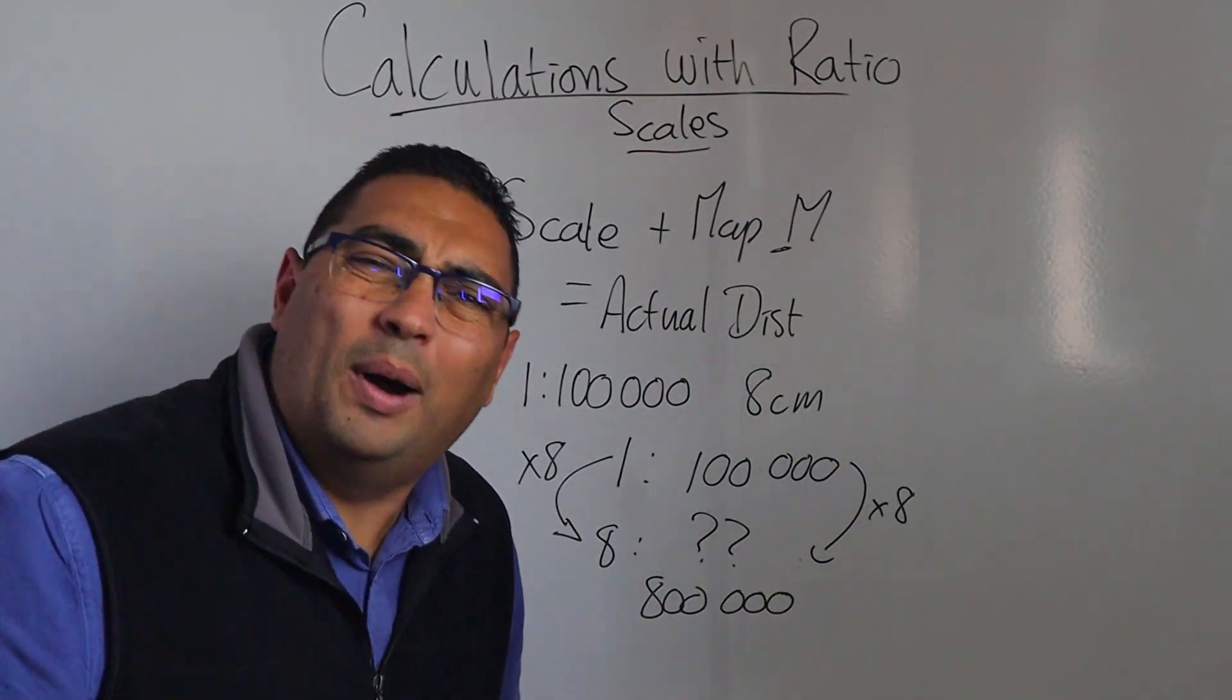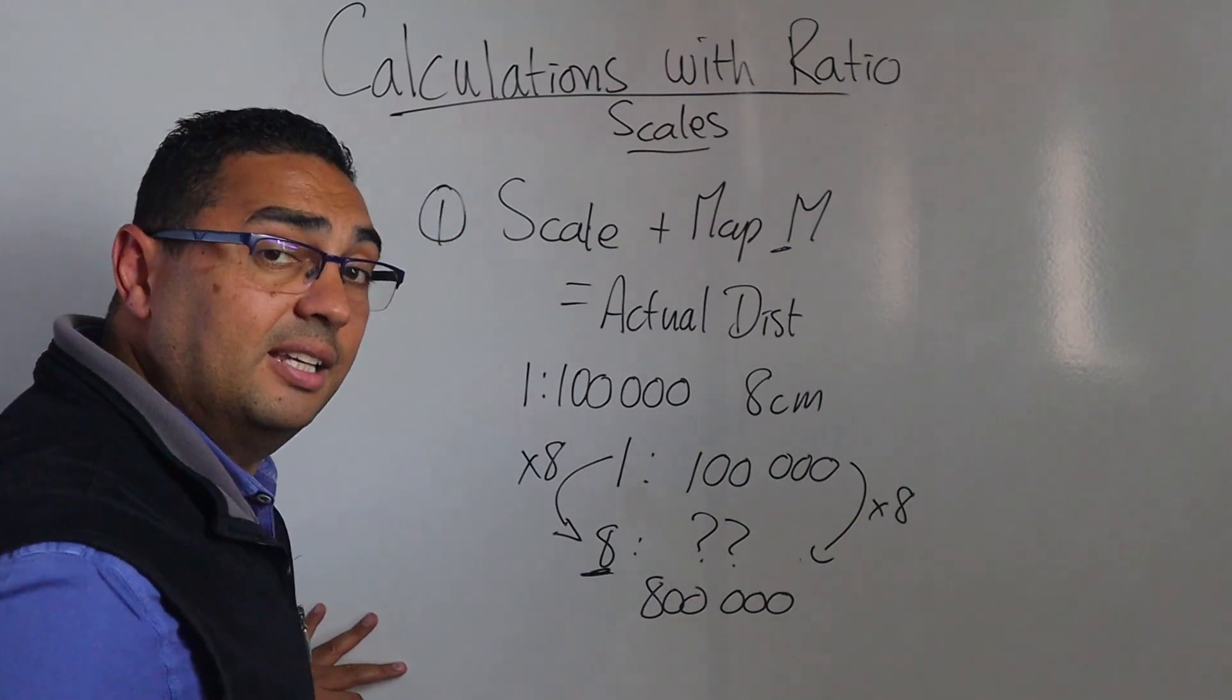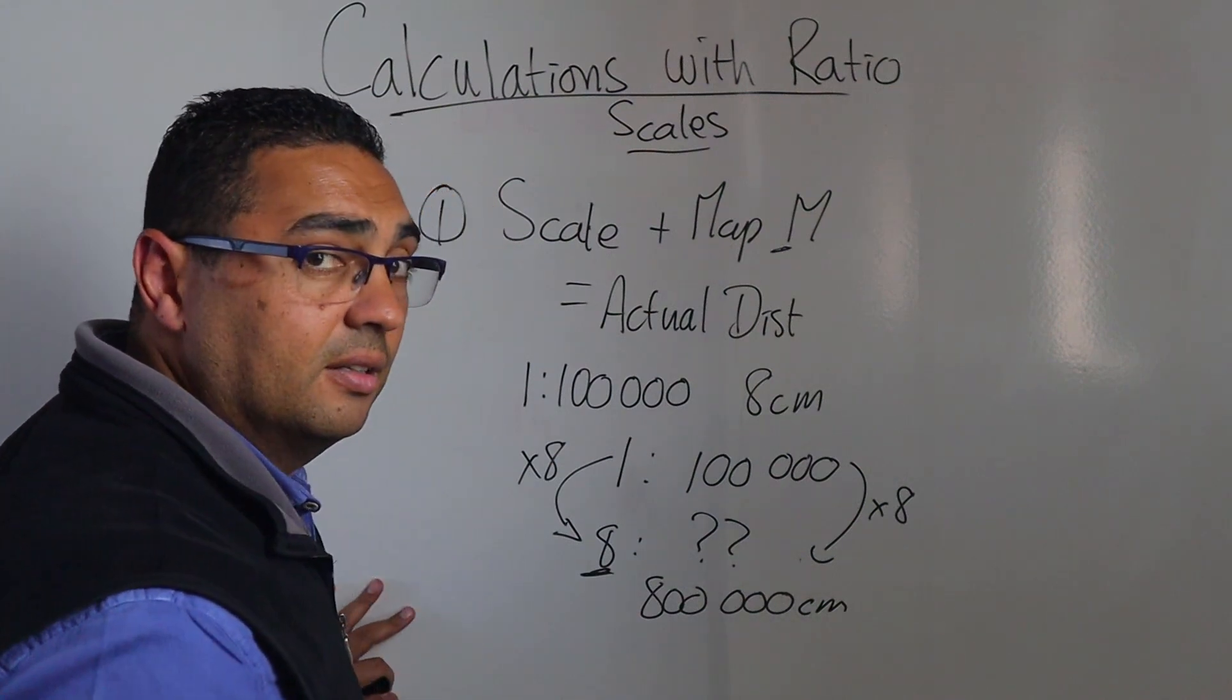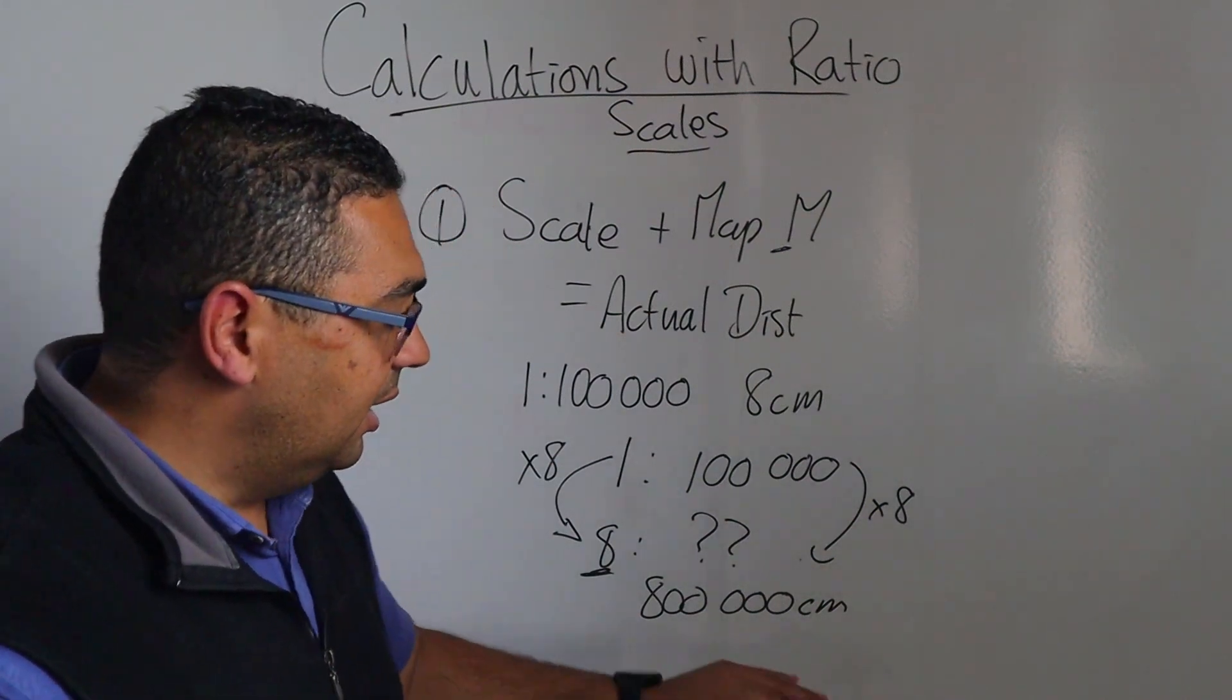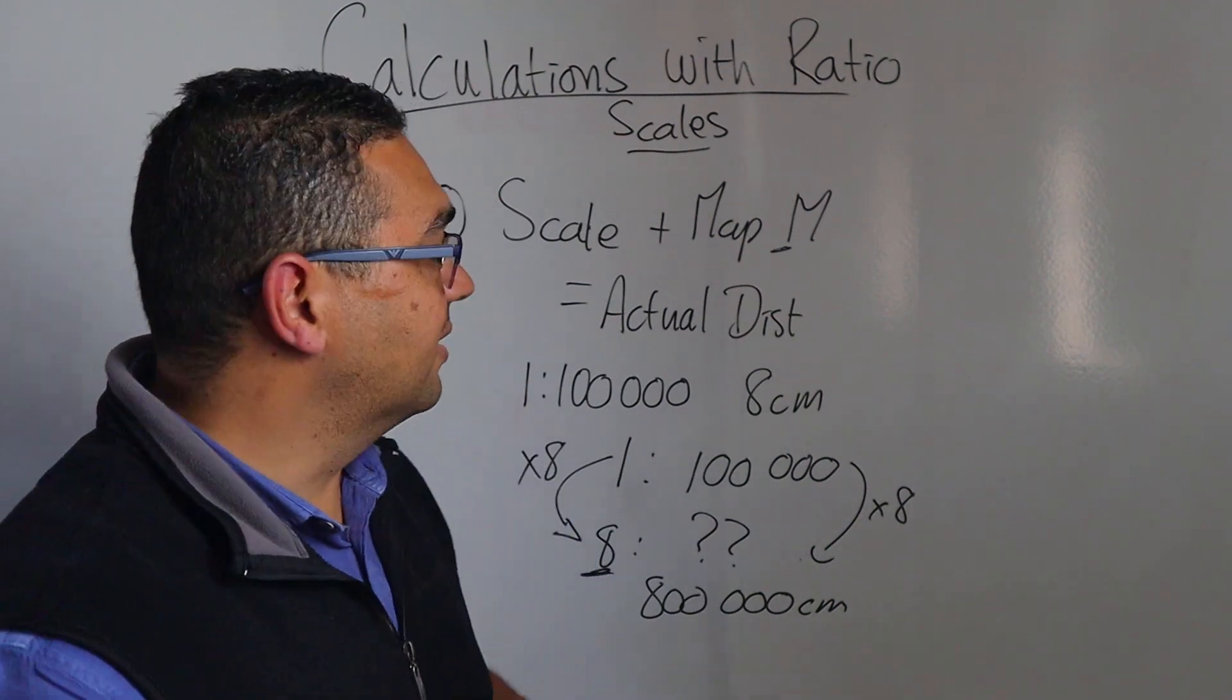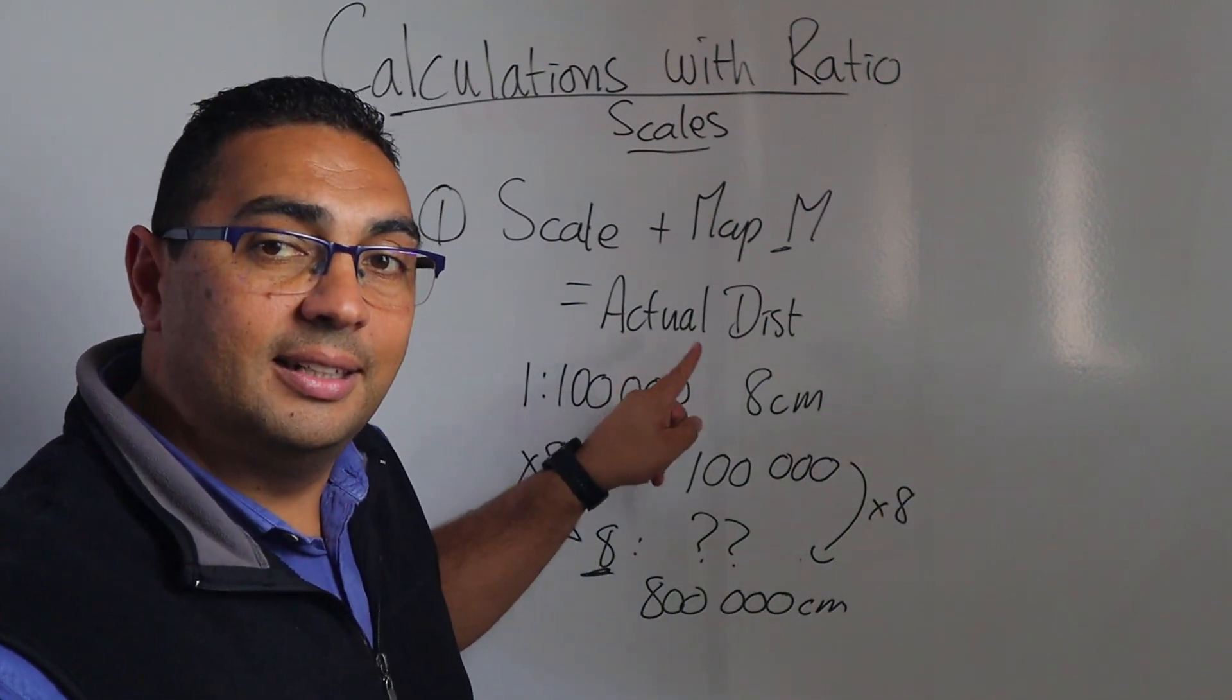But 800,000 what? Well seeing as I was working with centimeters this is going to be 800,000 centimeters. Now all I have to do is convert that to kilometers and that's where I get my answer of 8 kilometers as the actual distance.